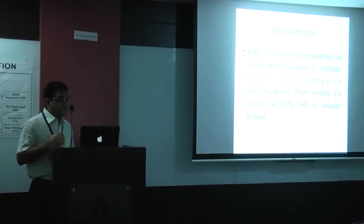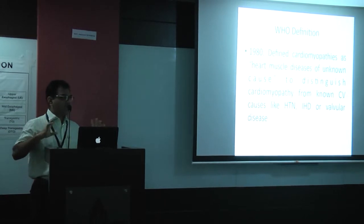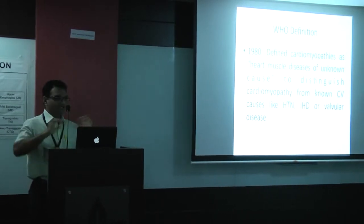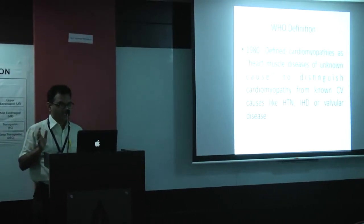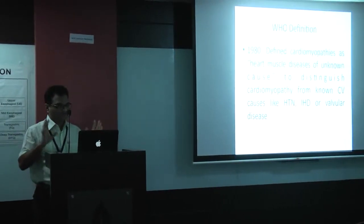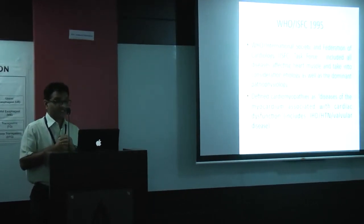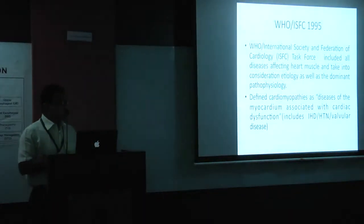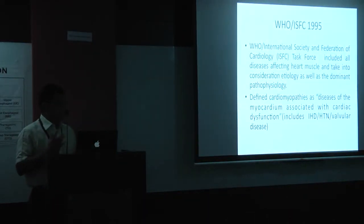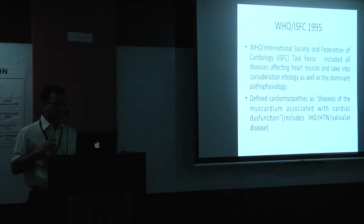WHO first started somewhere in 1980, saying this is a heart muscle disease of unknown origin, trying to get ischemic heart disease out of that equation. They sat on it for quite a while, and then in 1995, in association with the International Society and Federation of Cardiology, they included all causes — ischemic heart disease, valvular heart disease, everything.